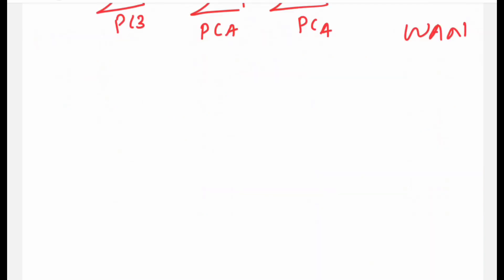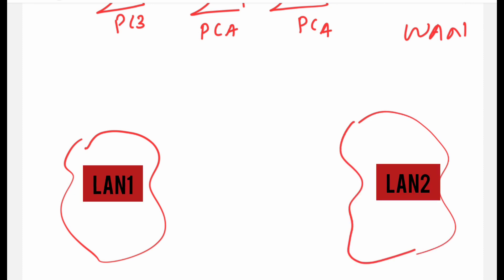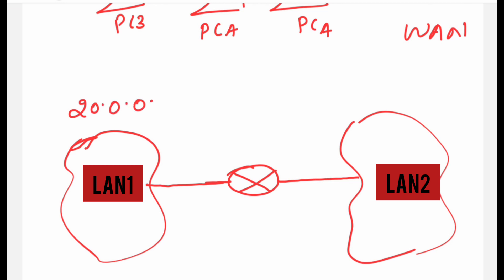The router also connects LAN to LAN. You have LAN 1 here and LAN 2 here. If one machine of LAN 1 wants to connect with a machine of LAN 2, you can make use of the router, because the PCs in each LAN have IP addresses belonging to different networks. For example, the network address for LAN 1 is 20.0.0.0 and the subnet mask is 255.0.0.0.